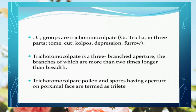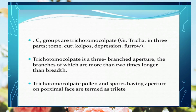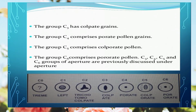For the C2 group, it is scientifically called trichotomocolpate. Tri means 3 parts, and there are 3 cuts, depressions, or furrows present. The arms have greater length compared to their width. Trichotomocolpate pollen and spores have apertures on the proximal face that are trilete. We can simply call them trilete, or use the term 'laevigate Y-mark'.